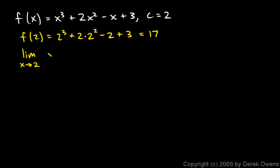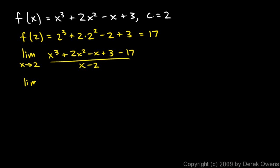f of x is x cubed plus 2x squared minus x plus 3, minus f of 2 which was 17, all over x minus 2. Combining gives us the limit as x approaches 2 of x cubed plus 2x squared minus x minus 14, all over x minus 2.